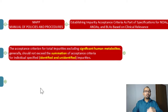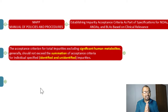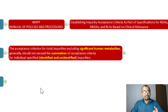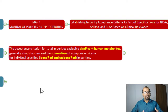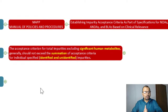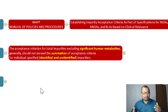Let us understand what this guidance says about deciding the limit for total impurities. Point number two states: the acceptance criteria for total impurities, excluding significant human metabolites, generally should not exceed the summation of acceptance criteria for individual specified — that means identified and unidentified — impurities. In short, if you have a number of known impurities, for example five, just sum the specifications of those individual five impurities, and that should become the limit for total impurities.